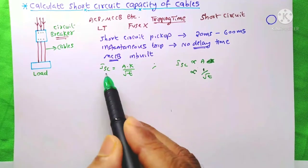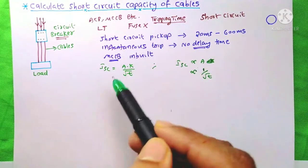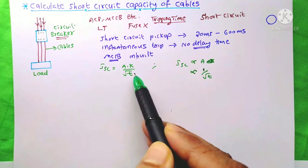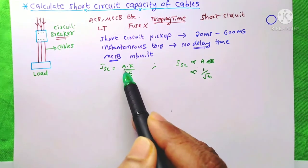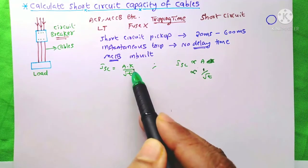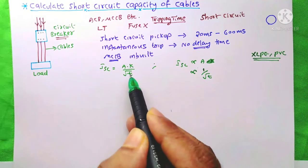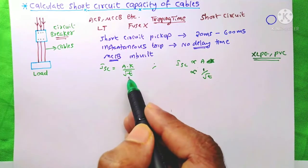The equation for the short circuit current for cables is A×K/√T. A means area of the cable, K is a constant, and T is the tripping time of the circuit breaker during the short circuit.